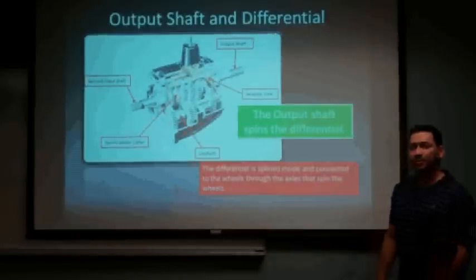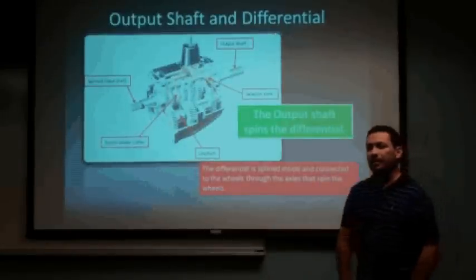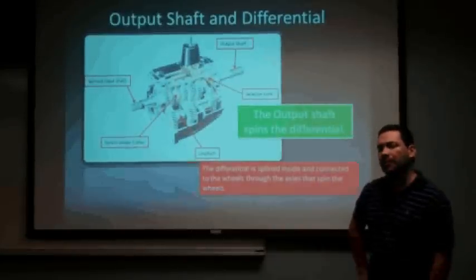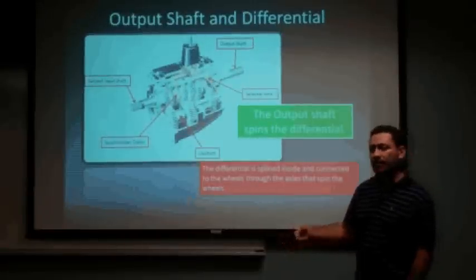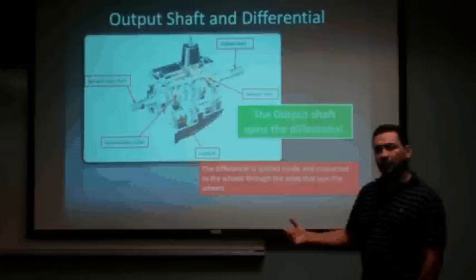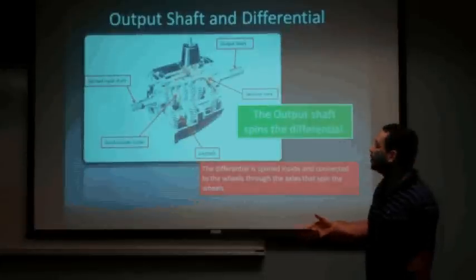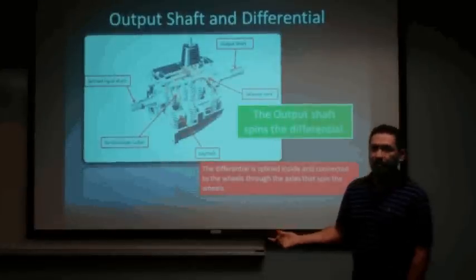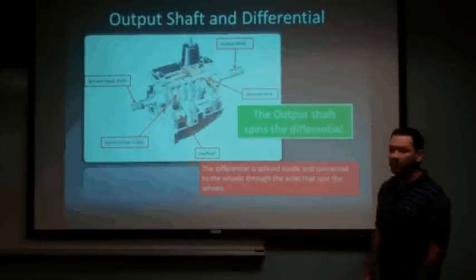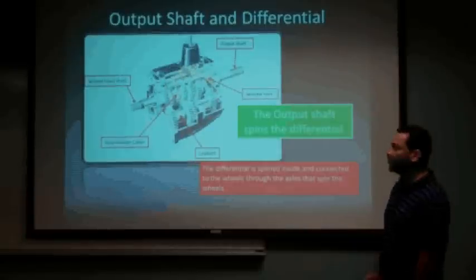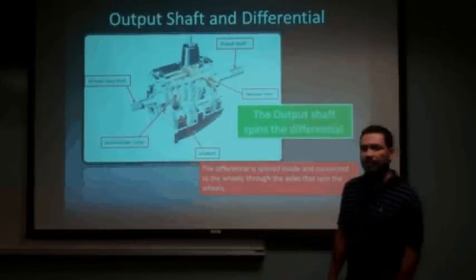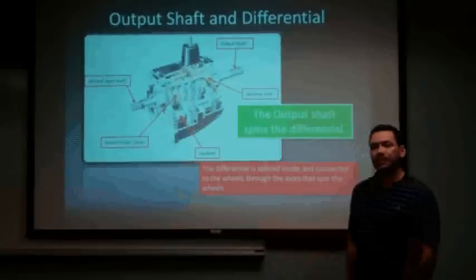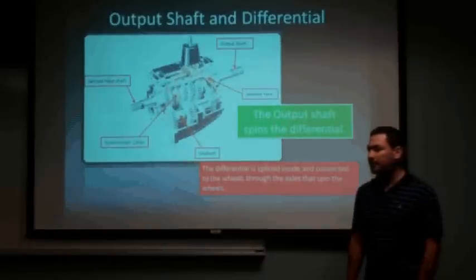The output shaft is connected to the differential. The differential, what it does, is it's actually connected to the axles of the car and it spins the wheels of the car, either forward or rearward, depending on the gear selected. The purpose of the output shaft is to spin the differential so the differential will move the wheels. I'm going to be handing over my presentation to Ray, who's going to be talking about different types of gears.